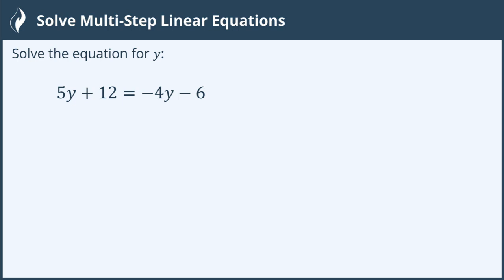This is called a linear equation because there's one variable. Technically it's a linear equation of one variable. We call it a multi-step linear equation because it's going to take many steps to complete and solve it.